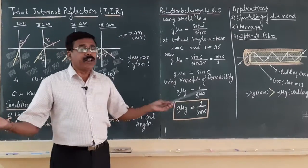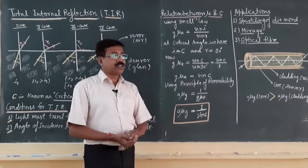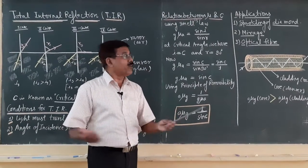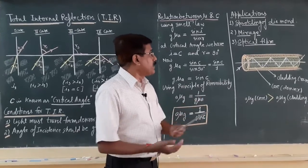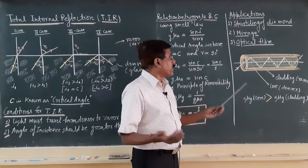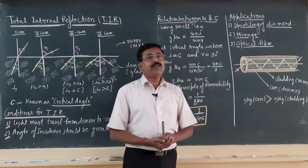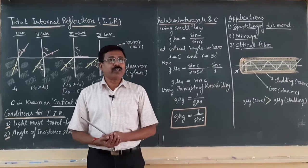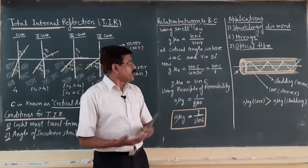There are many examples around us: the sparkling of diamond, the mirage, and optical fiber — all are based on the principle of total internal reflection.